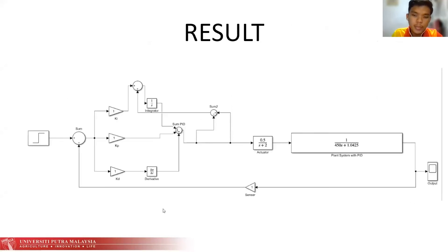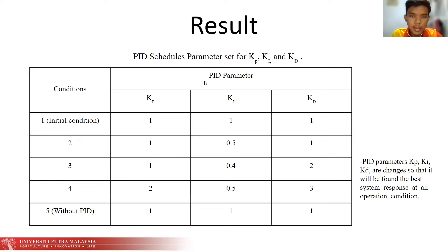Next we proceed with the result. These are the simulation of MATLAB for the system. These are the parameters that we change in order to obtain the graph in the output. We change the parameters of the PID controller, which are Kp, Ki, and Kd. There are five conditions that we set up. The first condition, which is the initial one, we set the value of Kp, Ki, and Kd to 1.